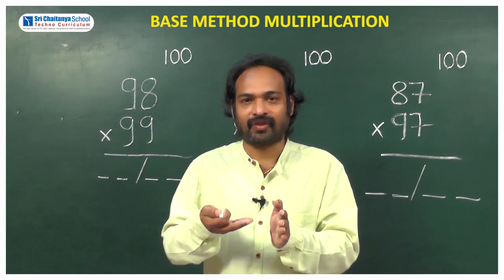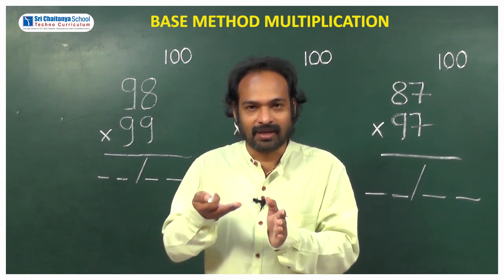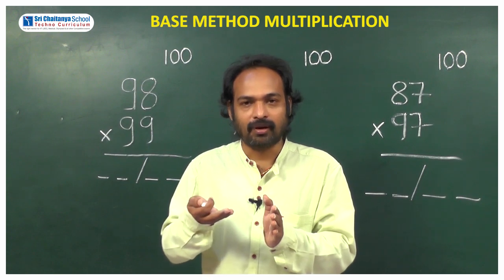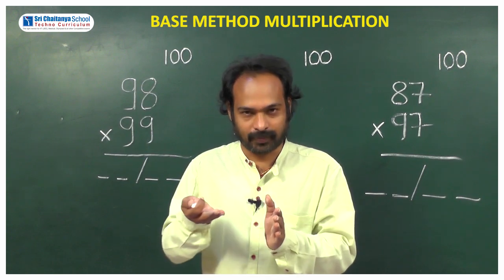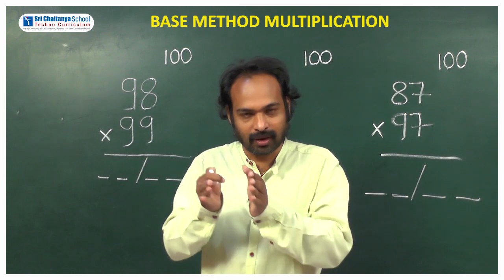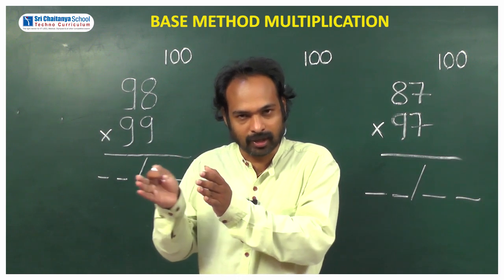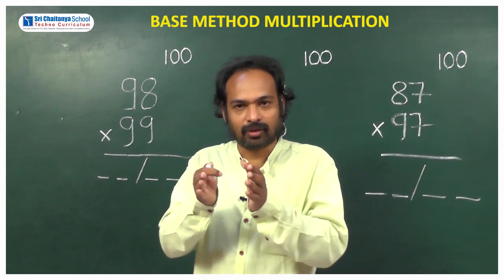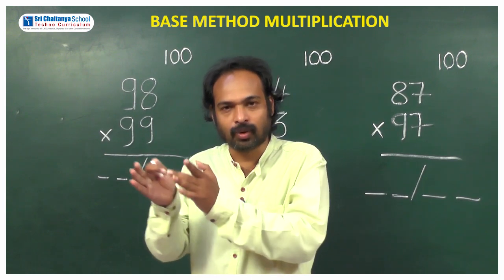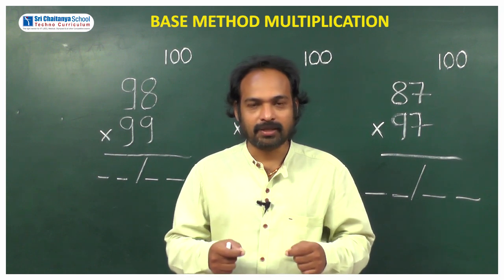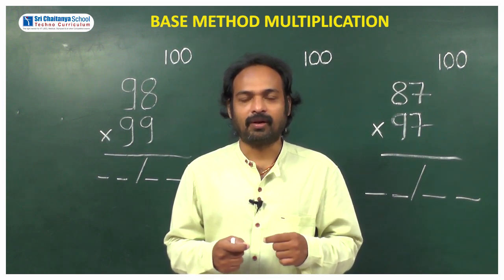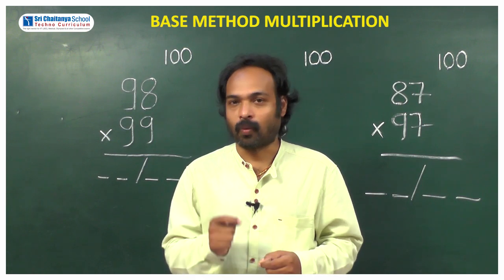Base value is nothing but we are taking the reference as 10, 100, 1000 - simply multiplications or powers of 10: 10, 10 squared, 10 cubed, 10 to the power 4 and so on. In base method calculation, the calculation can be done within no time once you understand the concept.